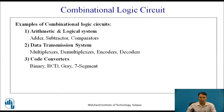There are various examples of combinational logic circuits used in digital circuits. In arithmetic and logical systems, the combinational logic circuits used are adder circuits, subtractor circuits, and comparators. In data transmission systems, combinational logic circuits used are multiplexers, demultiplexers, encoders, and decoders. In code converter systems, code converters may be binary to other code conversion, BCD to other code conversion, or gray to other code conversion.